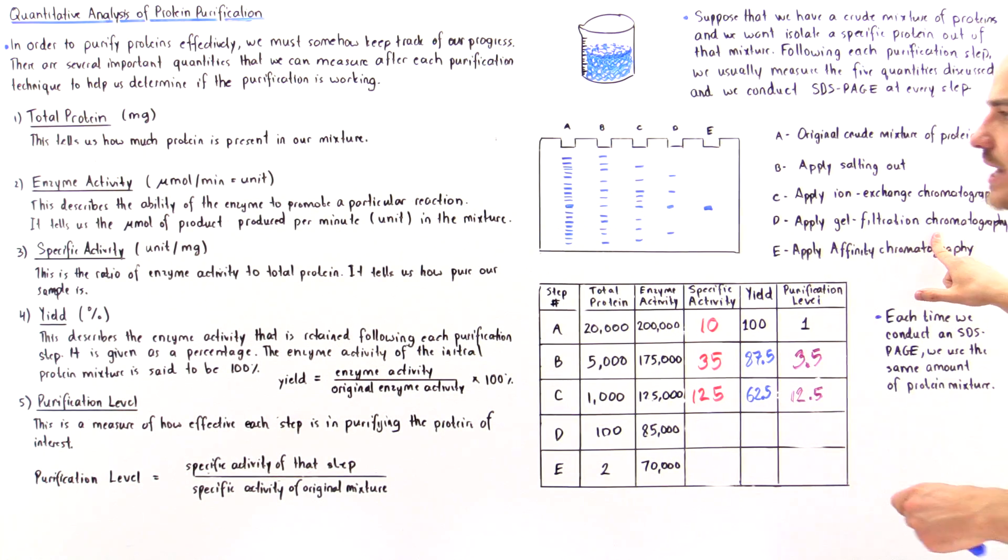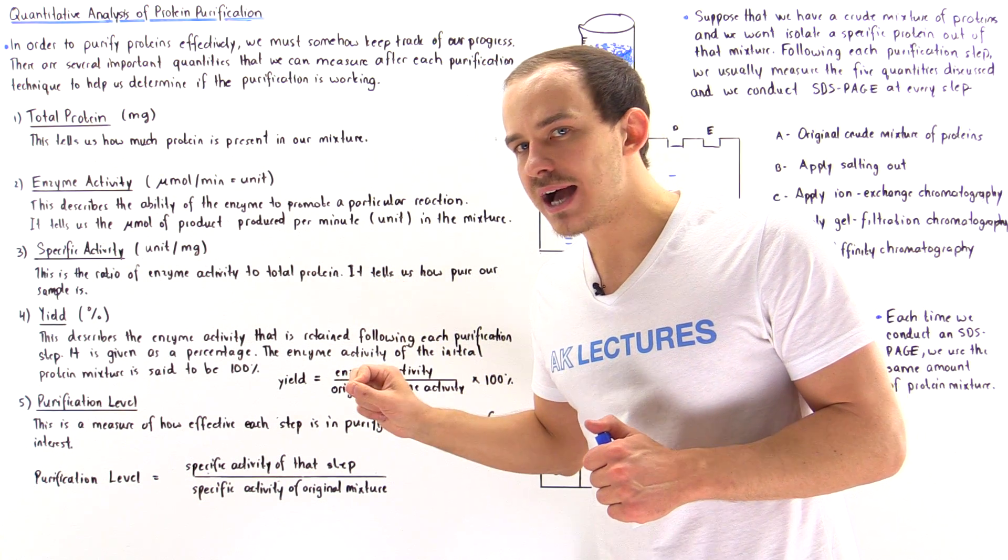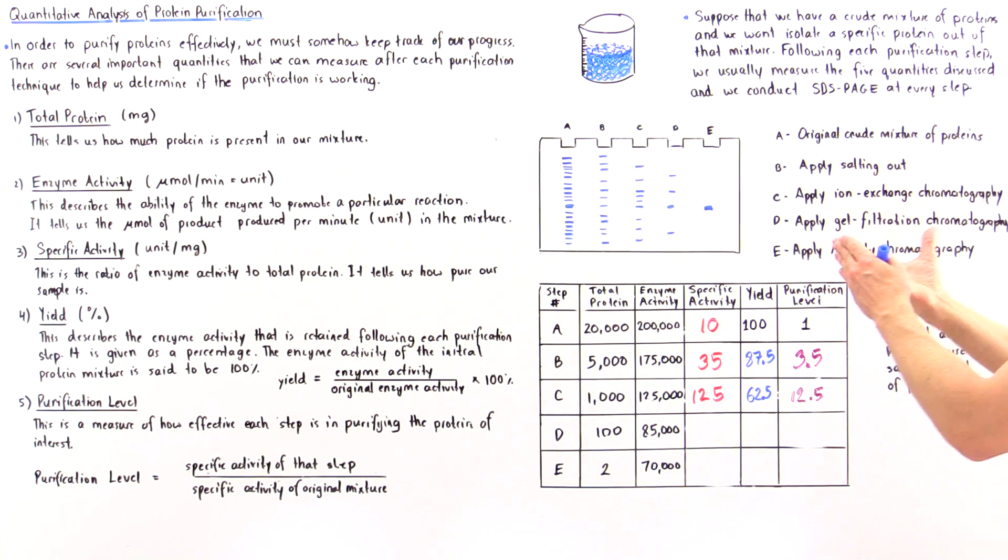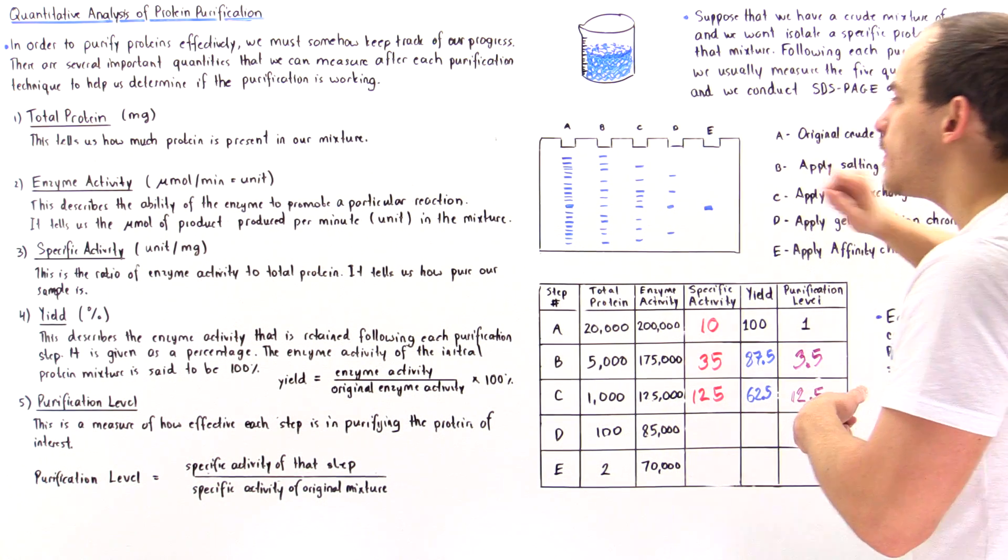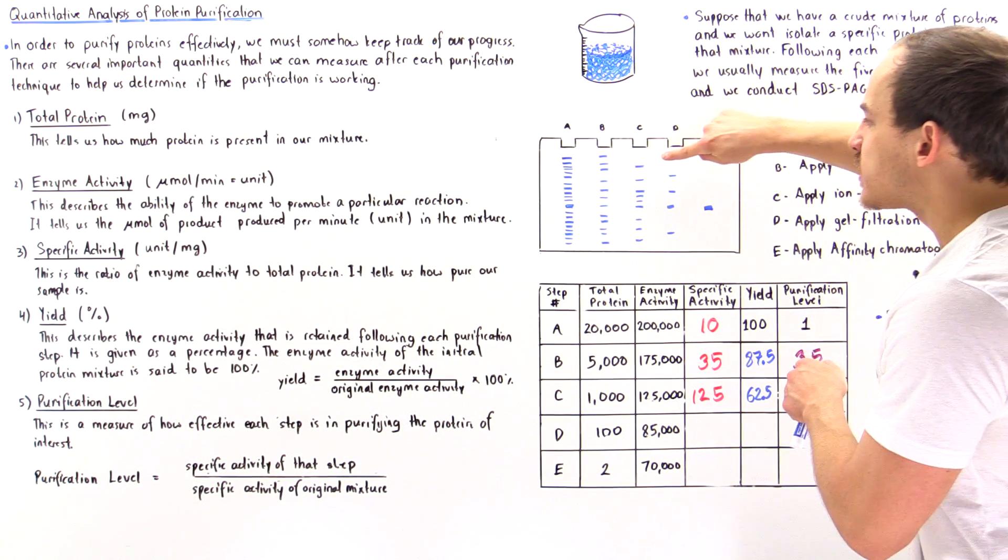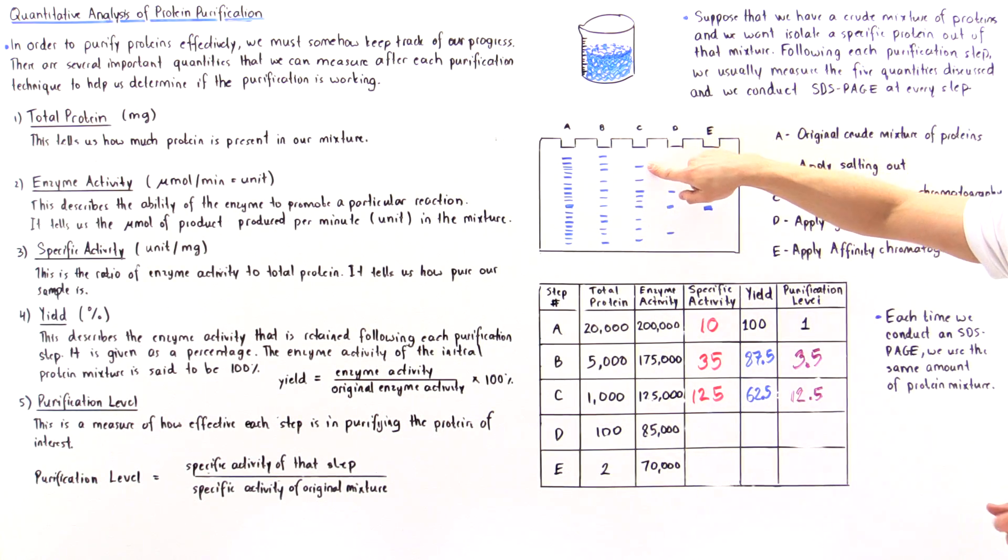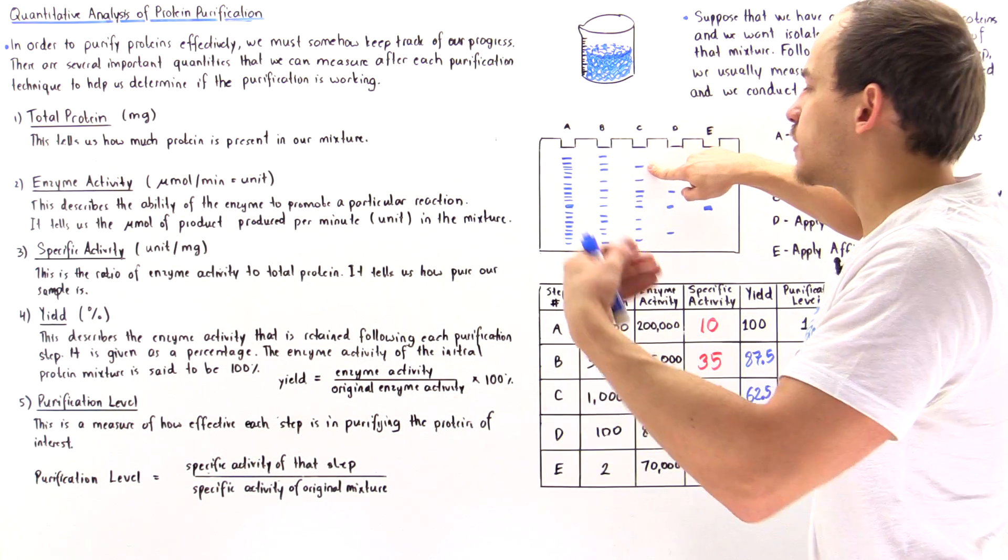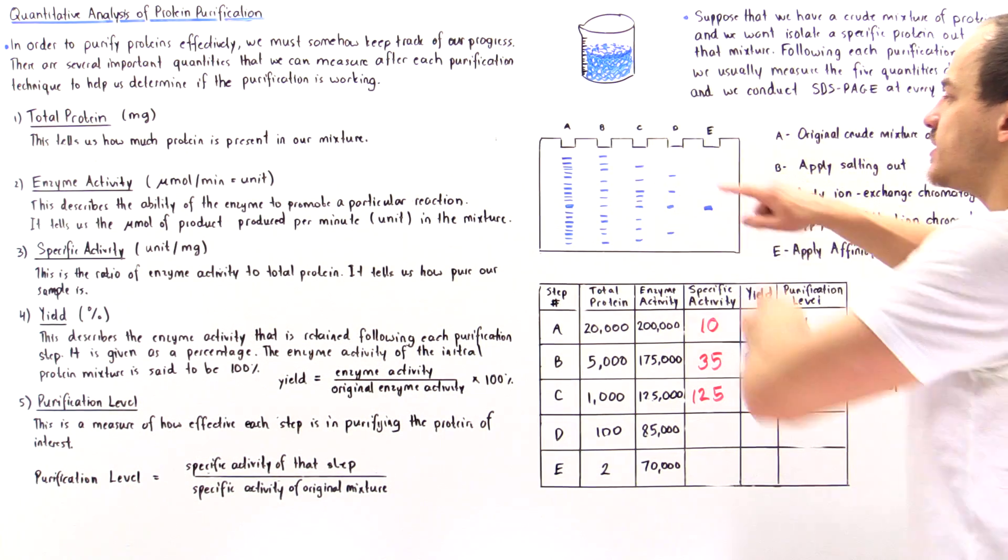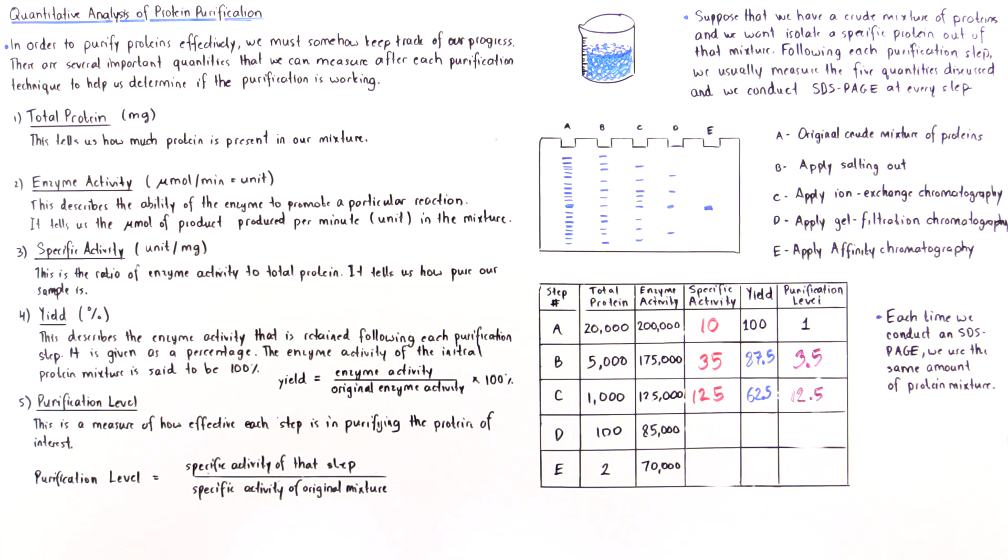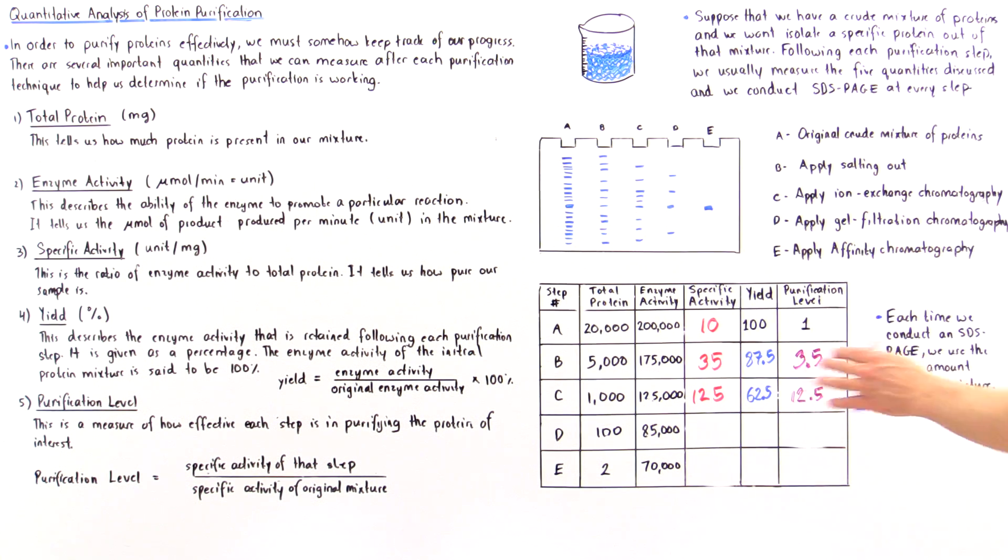Another procedure, gel filtration chromatography, separates proteins based on size. Following that, we extract the sample and place it into this well. This is the band that we get, and this band disappears along with other bands, which means we're slowly purifying the protein and removing unwanted proteins.